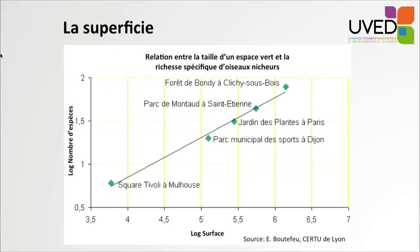What matters for biodiversity is the area of the spaces available for it. On this curve, you can see that the larger the green areas, the higher the number of species — here illustrated with nesting birds in the various gardens and green areas in France.